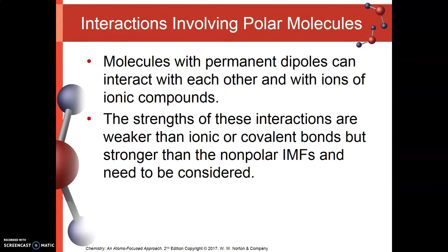Molecules that have permanent dipoles — that is, are polar — are going to be able to interact with each other and also with other ionic compounds. Now, the strengths of these interactions are kind of in between. They're weaker than ionic bonds. Ionic bonds are strong — we've got that electrostatic attraction between the positive cations and the negative anions, and that strength really draws ionic compounds together and has them stick together very well.